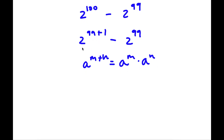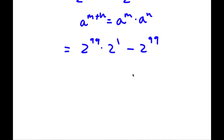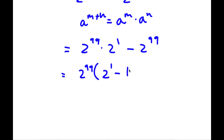So in this case, for 2 to the power of 99 plus 1, I can rewrite as 2 to the power of 99 times 2 to the power of 1, and then I have minus 2 to the power of 99 at the end. So now, because both these terms have 2 to the power of 99, if I factor out 2 to the power of 99, I get 2 to the power of 99 times 2 to the power of 1, minus 2 to the power of 99 divided by 2 to the power of 99, which is 1.